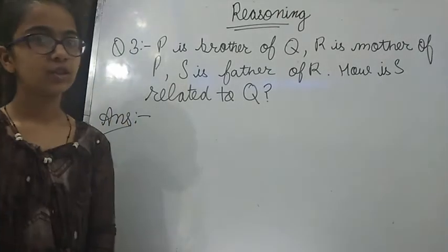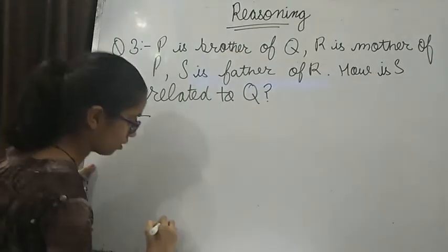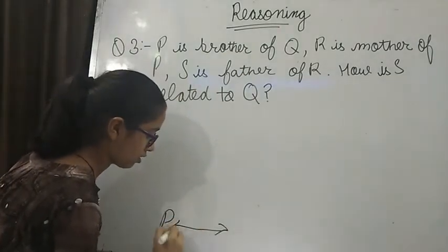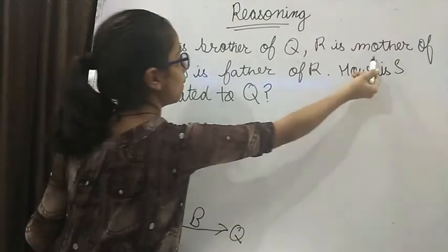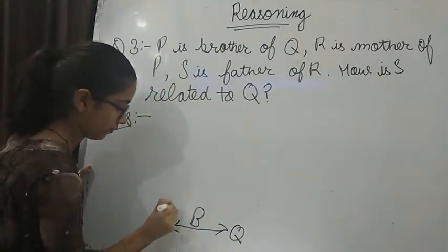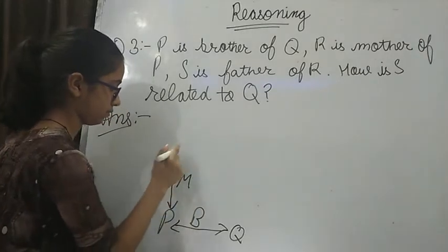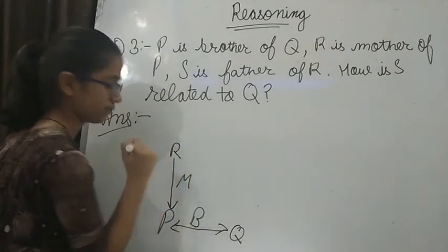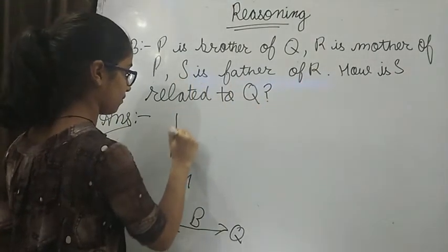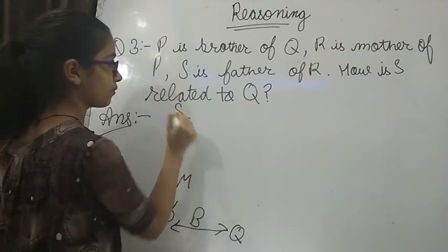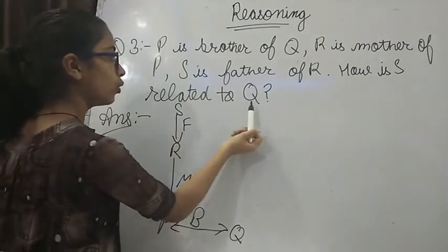Our third question is P is brother of Q. R is mother of P. S is father of R. So we have to tell how is S related to Q.